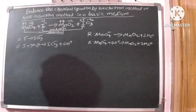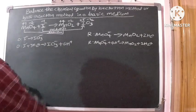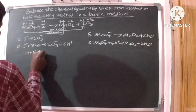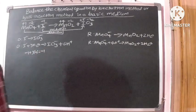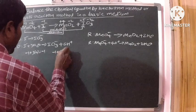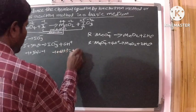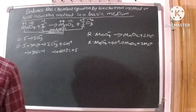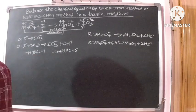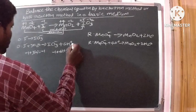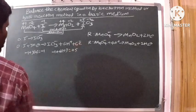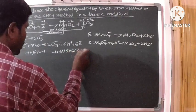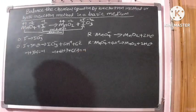In a redox reaction, the sum of charges must be equal on both sides. In the oxidation half reaction, the left side charge is minus 1 + (3×0) = minus 1, and the right side is minus 1 + (6×+1) = plus 5. Both sides are not equal. We add 6 electrons to the right side, making it plus 5 + (6×−1) = minus 1. Now the charges are equal.